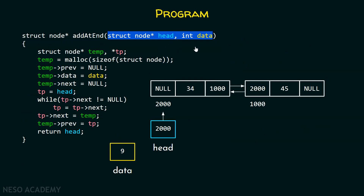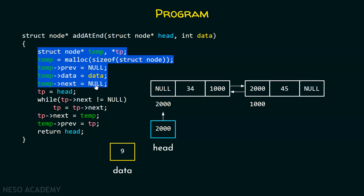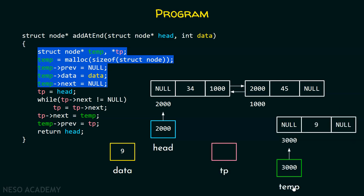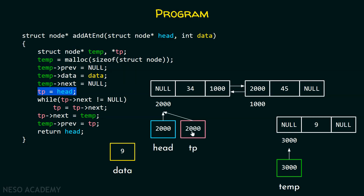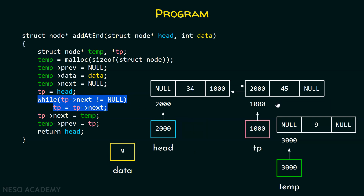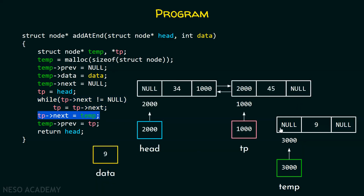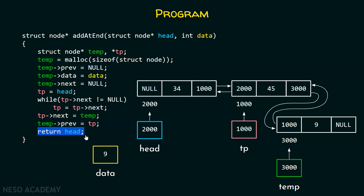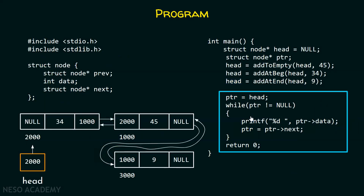The addAtEnd function receives a head pointer and a variable data. The head pointer receives the address of the first node, and data receives the value nine. Using these lines of code, we create a new node with a temp pointer pointing to it. We also have a tp pointer, which is first set to head, then traversed to the last node. Finally, we update tp->next to point to the new node and temp->prev to point back. Then we return head to the main function. The output is 34, 45, and 9.